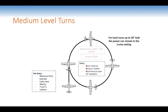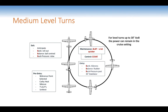During the turn, check you have the correct angle of bank on the artificial horizon, then anticipate rollout. When you see that reference point approaching, anticipate — bank rollout, balance, ease back pressure. Note: in a left-hand turn, reference points come more quickly; in a right-hand turn, you'll see the reference point come into view across the windscreen.